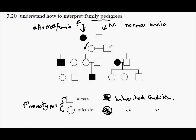This daughter and this man have children in the next generation, indicated by this vertical line. We can see they have two sons and one daughter. These children — the two sons and the one daughter — are the grandchildren of the first couple. This one son is an affected male, so he has inherited the condition. The daughter is normal and the other son is also normal.